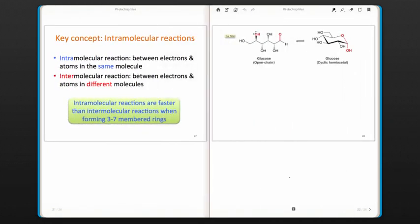So the key concept that we've just seen here, an intramolecular reaction happens between the electrons and atoms in the same molecule. Intermolecular reactions occur between electrons and atoms in different molecules. Intramolecular reactions are fast. They're faster than intermolecular reactions, particularly when we're forming three to seven membered rings. I encourage you to draw the mechanism for this particular reaction. We're going to come back to it in class, but it's very similar to what we just saw.